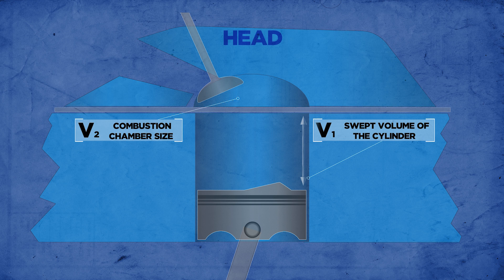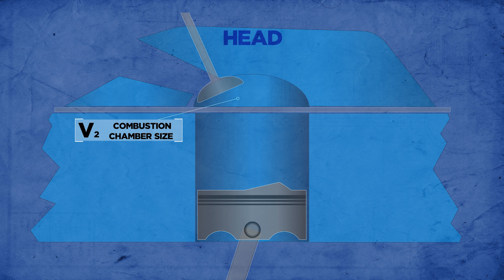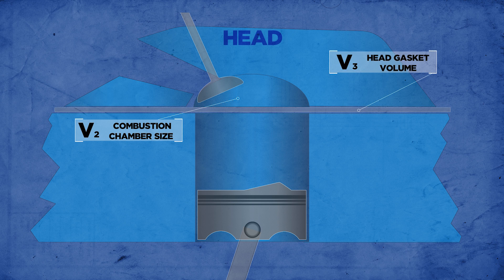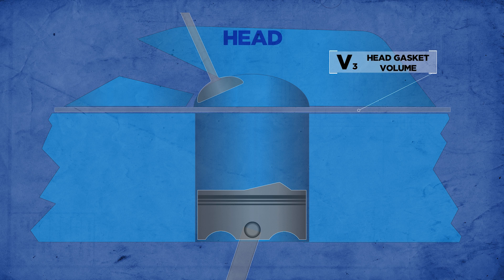Number two: combustion chamber size. Increasing it will lower the compression ratio, and decreasing it will raise the compression ratio, assuming no other changes have been made. Number three: head gasket volume — meaning the gasket's bore size and the gasket's thickness. You might not realize it, but variations in head gasket volume can increase or decrease compression ratio by over half a point.